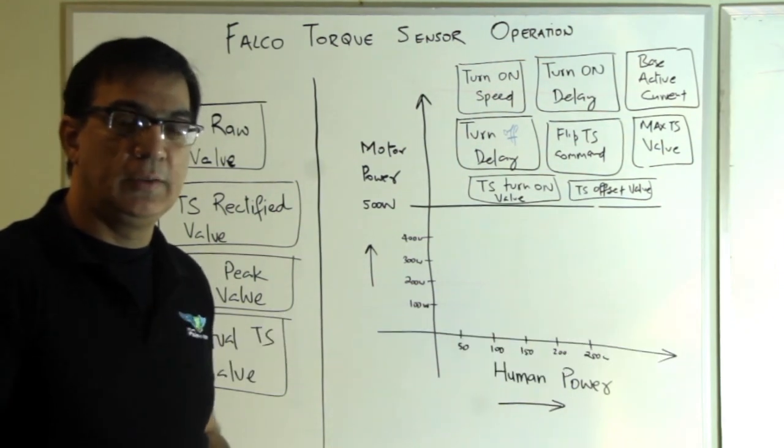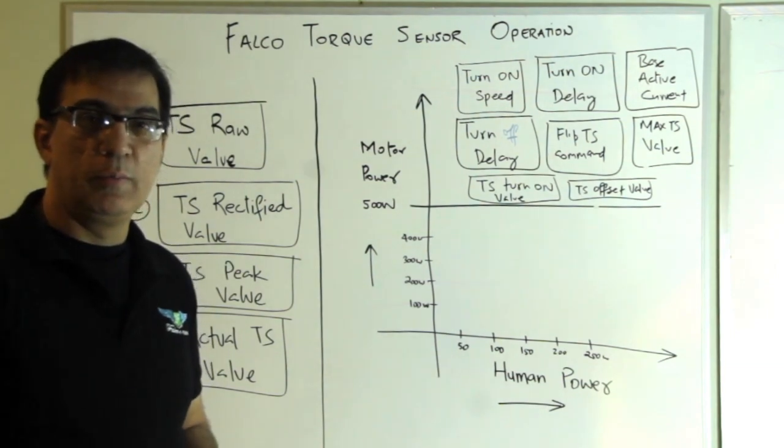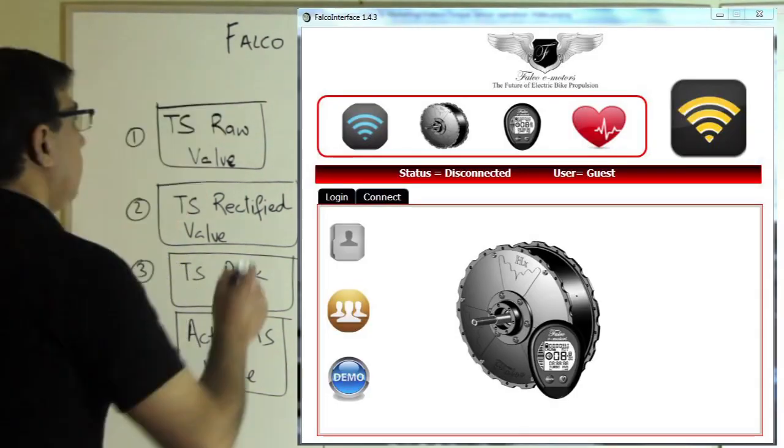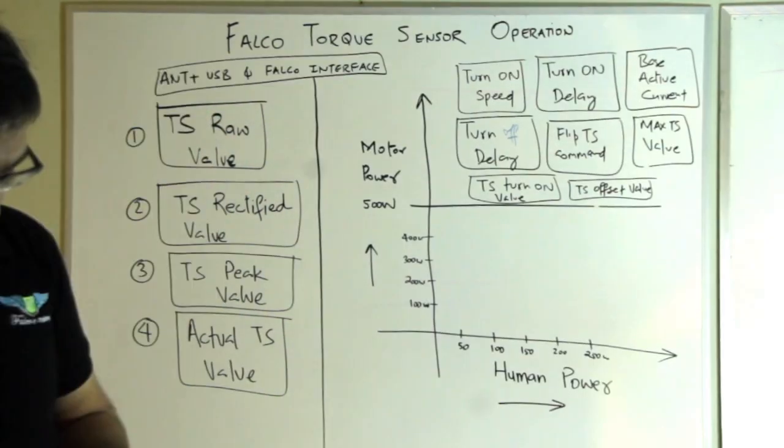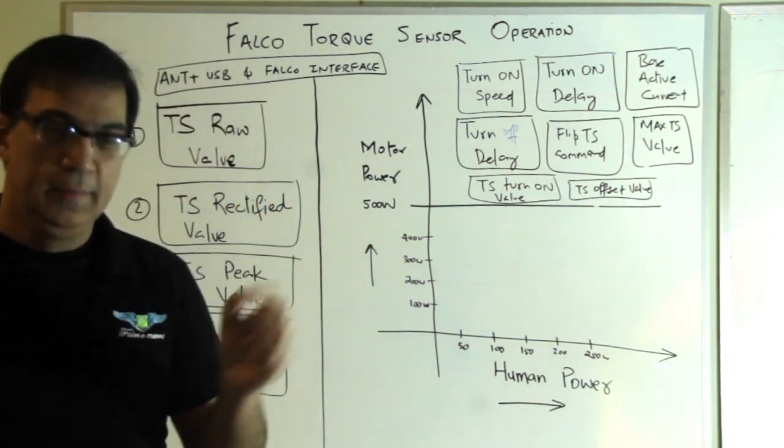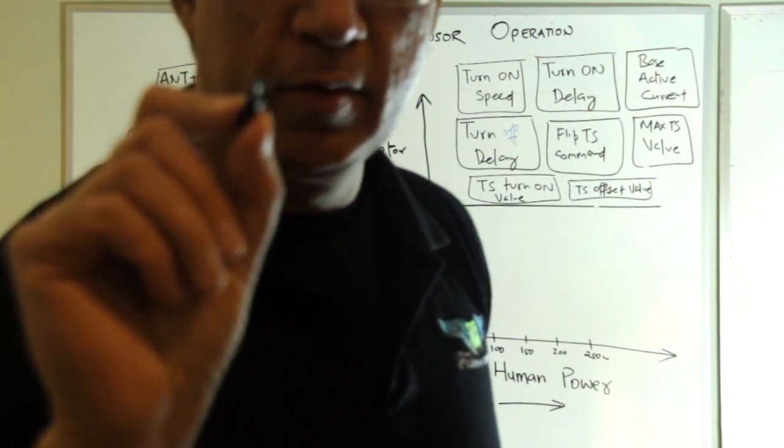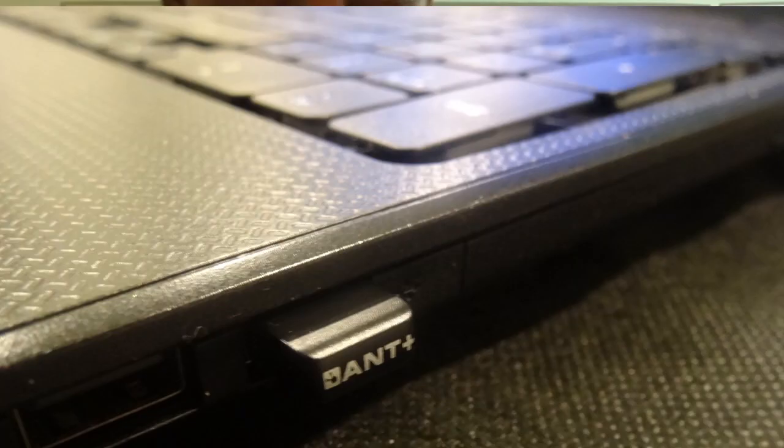One way to calibrate your torque sensor is that you use Falco interface 1.4.3. I have in my hand the micro and plus USB stick. You can get that from Falco and you need to plug this into your laptop, a Windows laptop.